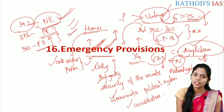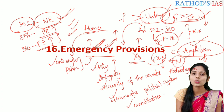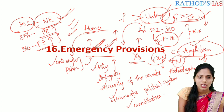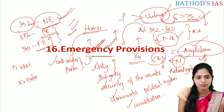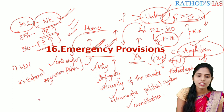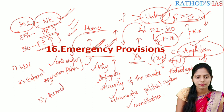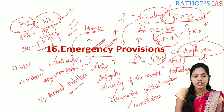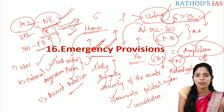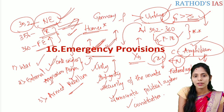According to article 352 of the Indian constitution, the president is empowered to impose a national emergency when satisfied on three important grounds: war, external aggression, and armed rebellion. Before discussing what war, external aggression, and armed rebellion mean, let us note that the national emergency provision is borrowed from Germany — this is an important prelims fact.